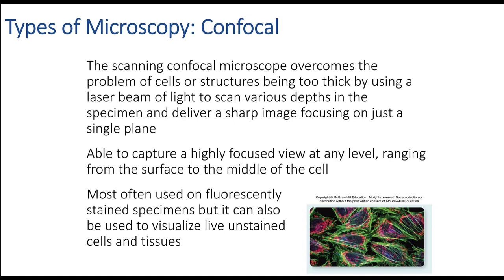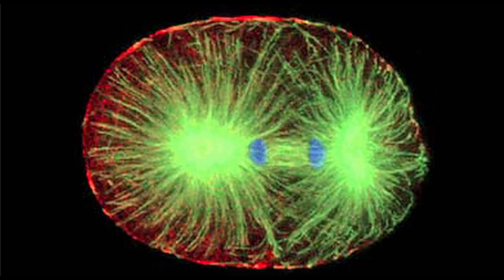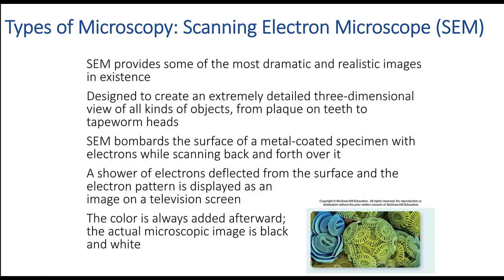Another type is the confocal microscope. When cells are too thick, we can use a laser beam to scan to various depths of the specimen. It combines fluorescence with the ability to see structures that are more dense. Confocal allows us to do that, and the resulting images are amazing — we can even see DNA. Now we will switch gears and move away from different frequencies of light or UV, and move to electrons, using an electron gun.